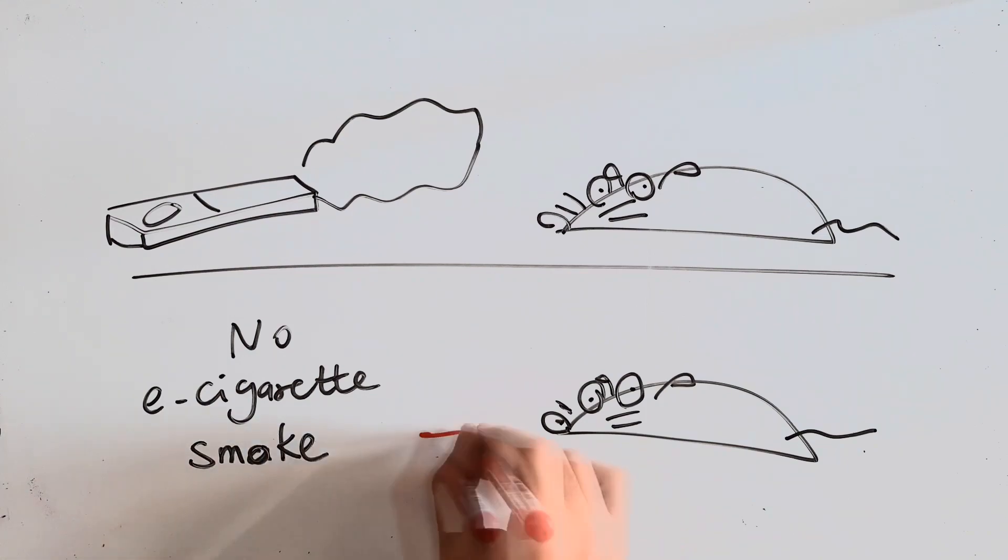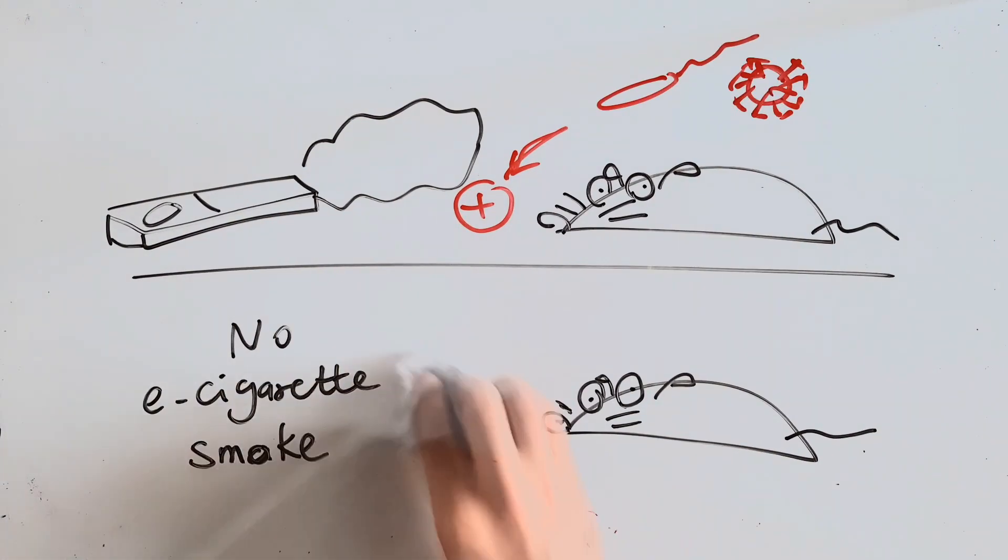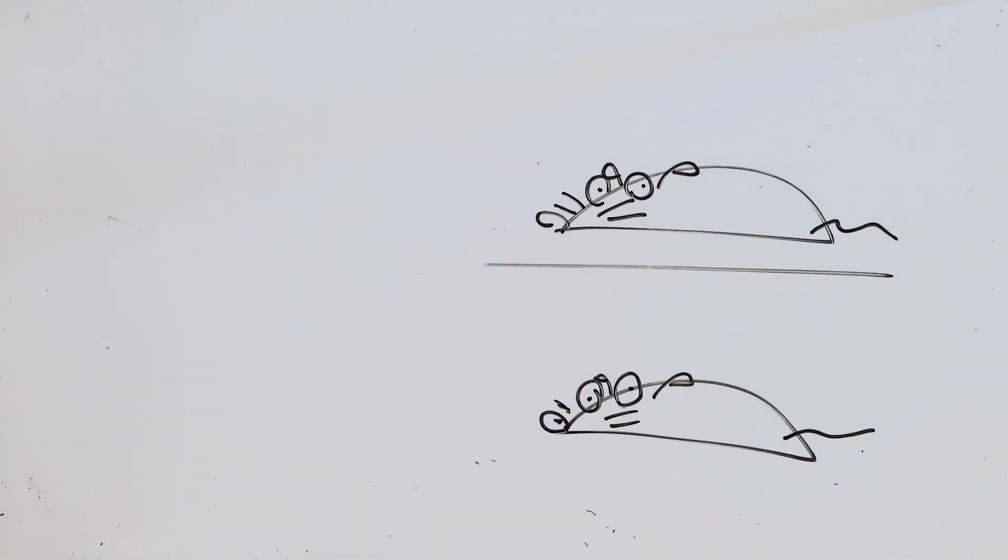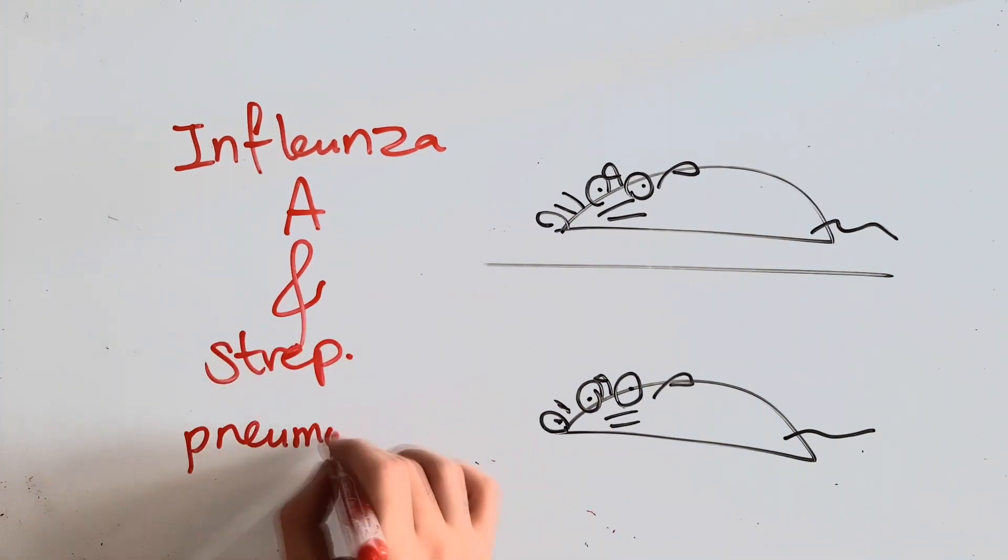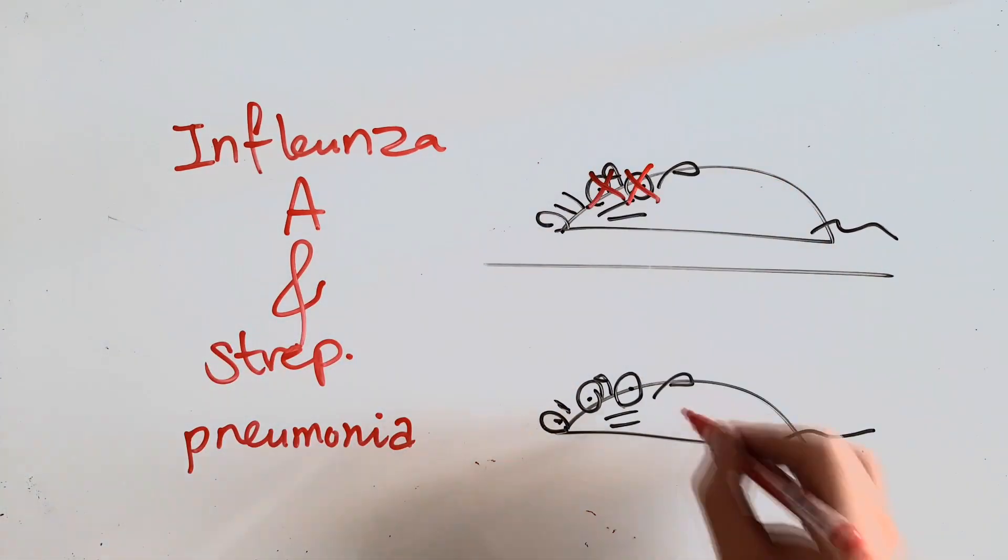two are two of the most leading causes of pneumonia in humans. They found out that the mice that were exposed to the e-cigarette smoke were way more susceptible to have the infections than the other mice that were not exposed to the e-cigarette at all.